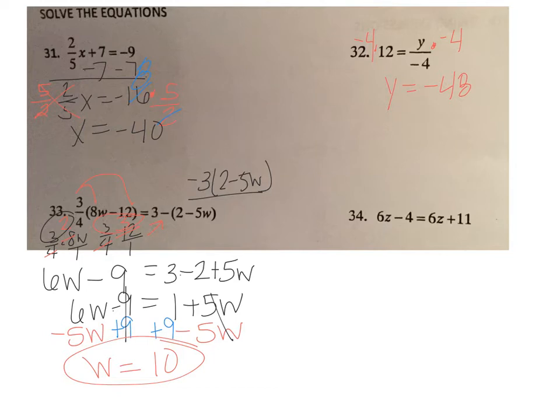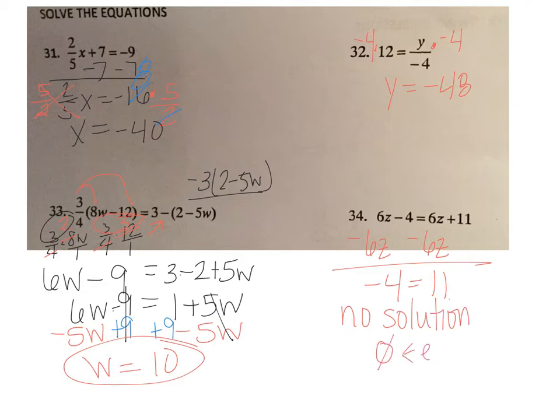Number 34, variables on both sides, so we're going to subtract 6z from both sides of the equation. I get negative 4 equals 11. Is this true? No. Negative 4 will never equal 11, so that means this equation has no solution. And our shortcut for writing that is a 0 with a line through it. This means the empty set. There is no numbers that actually work.